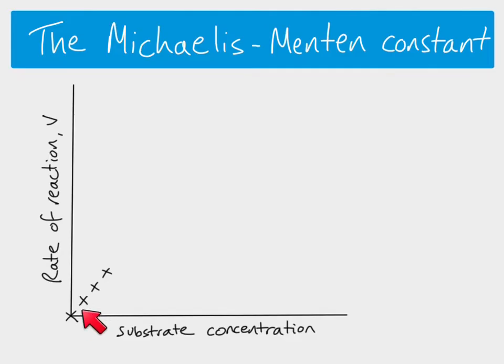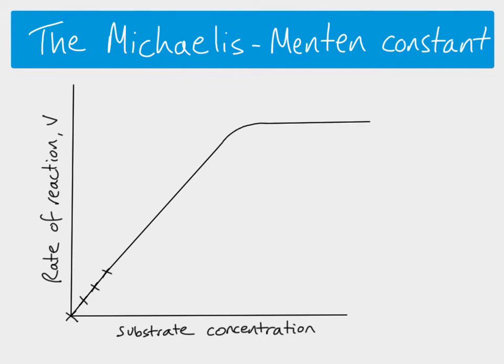The initial rate of reaction when we go from having no substrate to some substrate is always going to be very steep. After that point, if you keep increasing the substrate concentration, the rate of reaction will increase, usually slightly less steeply, until some point where the rate stays the same even if you increase the substrate concentration.